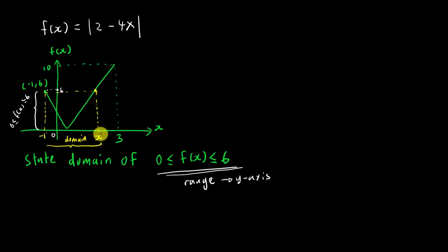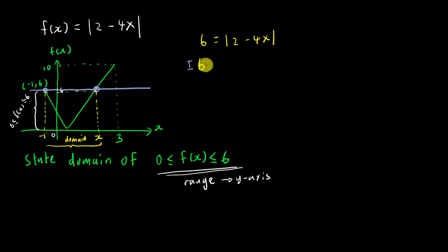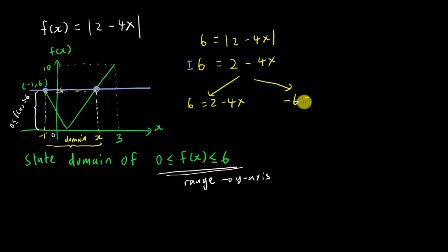The only information I have is that the y-value is 6, and I want to find the x-value. So I substitute 6 into the equation: 6 = |2 − 4x|. When y = 6, you are touching two coordinates on the V-shape. When we expand the modulus, we get ±6 = 2 − 4x, giving us two equations: positive 6 = 2 − 4x and negative 6 = 2 − 4x.